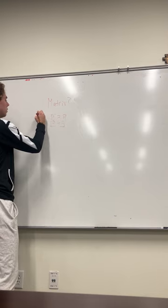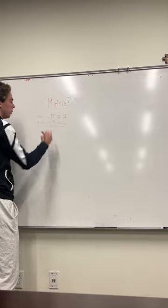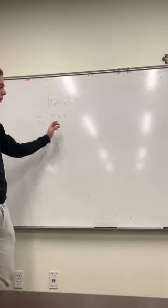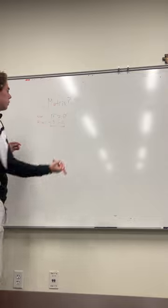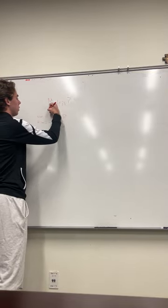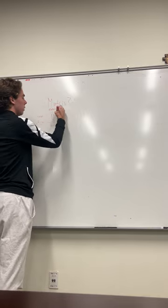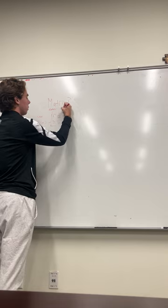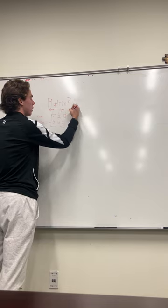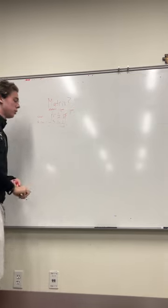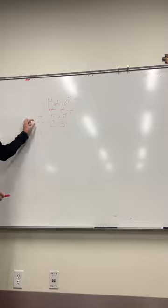So we have row 1 and row 2. This is an example of a matrix. Along with the rows, we also have three columns. This is column 1 — 1 and 5. This is column 2 — 2 and 6. And this last one is column 3 — 3 and 2. That is the basics of what makes up a matrix: we have rows and columns.